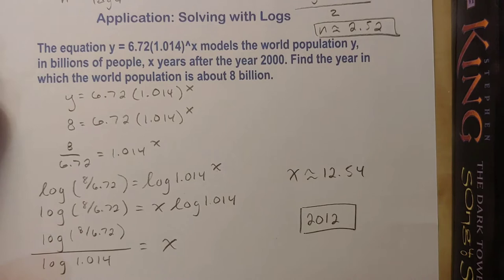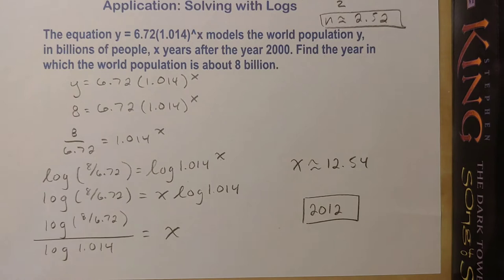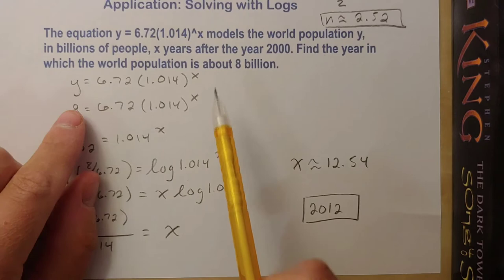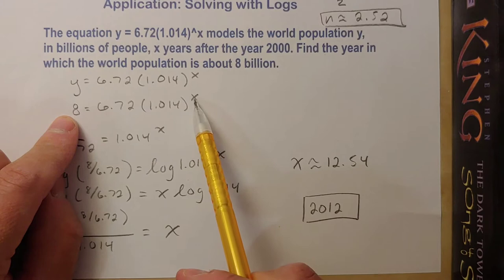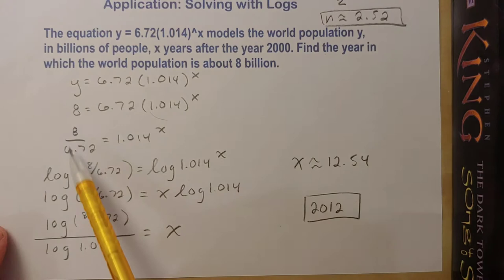I didn't go over this one in the last video, but I wanted to show you the solution here for anyone that tried this one. It's essentially like all the ones we did above, but we start with a story problem where we're given this exponential function and we need to plug in 8 for y and then solve for x, the number of years. The first thing we do is isolate this term, so I divide both sides by 6.72.